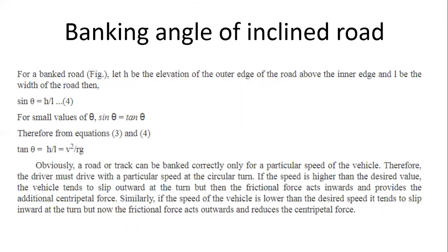We can also calculate the banking angle of an inclined road. If l is the distance between two sides of the road and h is the elevation of the outer edge, then sin θ = h/l. For small angles of theta, sin θ ≈ tan θ, so we get: tan θ = h/l = v²/rg.